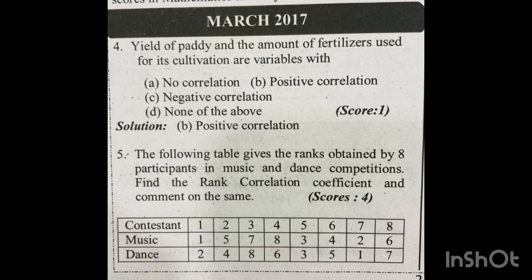The yield of paddy and the amount of fertilizers used for its cultivation are variables with a positive correlation. In a single paddy field, we use fertilizers and pesticides. If we use more fertilizers on that part of the field, the yield increases. Here, an increase in one variable automatically leads to an increase in the value of another variable.